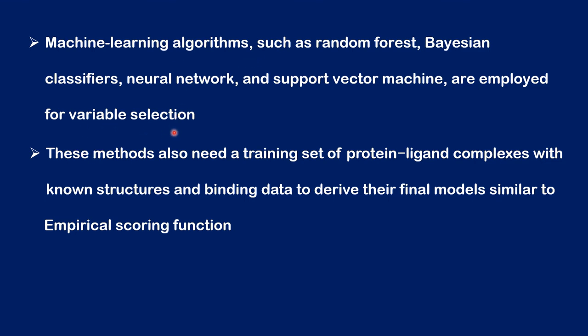These methods also need a training set of protein-ligand complexes with known structures and binding data to derive their final models, similar to empirical scoring functions. We have now seen all four different types of scoring functions. The first three are based on force field methods, empirical methods, and a knowledge base from the Protein Data Bank containing known 3D structures of protein-ligand interactions. The fourth is based on machine learning algorithms and descriptors. The common element for all four scoring functions is the knowledge base — the database needed to predict the data sets.